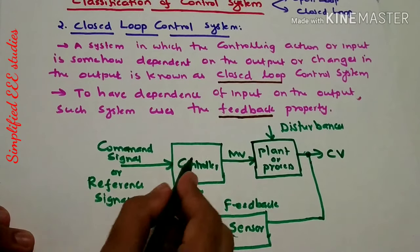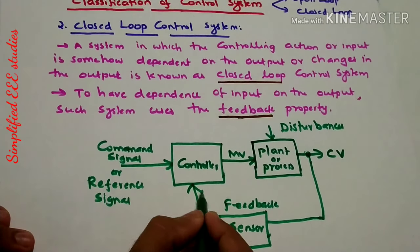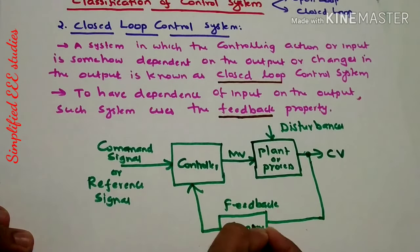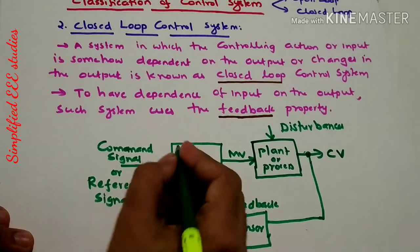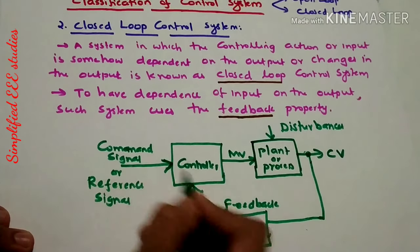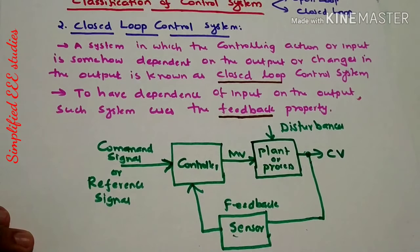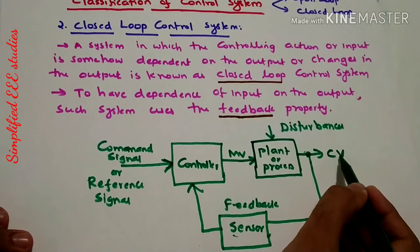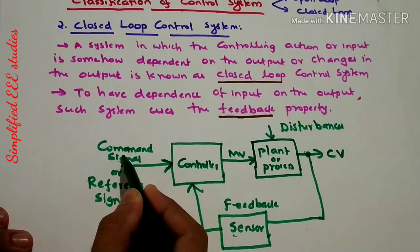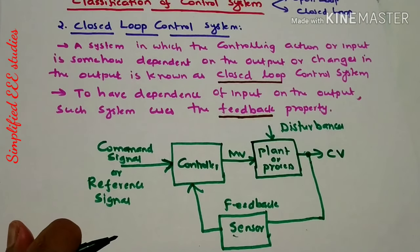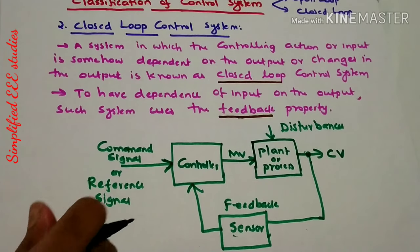The controller compares the command signal or reference signal with respect to the controlled variable, which is measured through the sensor. These are the two inputs: one is the command signal and the other is the feedback. The controller handles both the command signal and the feedback signals. The difference is generally called the error signal — the controller compares the actual controlled variable and the command signal and generates the error signal.